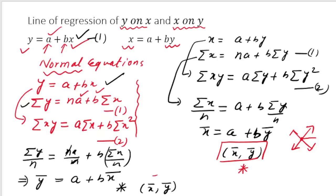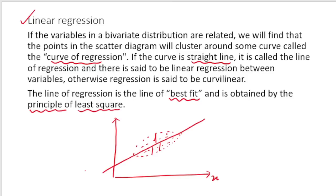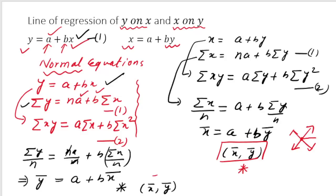Why do we require two regression lines? When fitting the regression line of y on x using the principle of least squares, we minimize the perpendicular (vertical) distances. When fitting the regression line of x on y, we minimize the horizontal distances. So one regression line is not sufficient. When x is the independent variable and we predict y, we use the regression line of y on x; when y is the independent variable and we predict x, we use the regression line of x on y.